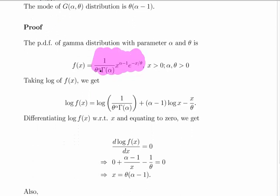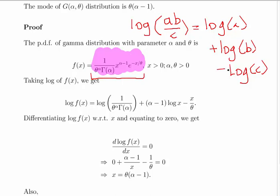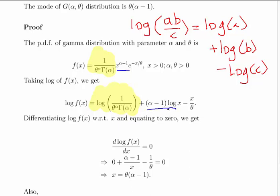We take the logarithm of the PDF expression. Using log laws: the log of a product becomes a sum of logs, and the log of a quotient becomes a difference of logs. The log of X to the power of alpha minus 1 becomes alpha minus 1 times log X using the power rule, and the log of e to the minus X divided by theta simply becomes minus X divided by theta. So the log PDF equals a constant term, plus alpha minus 1 times log X, minus X divided by theta.